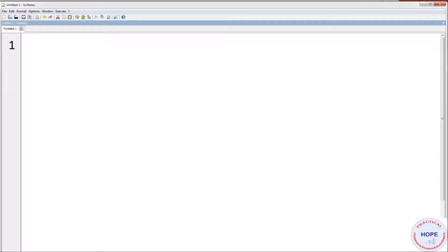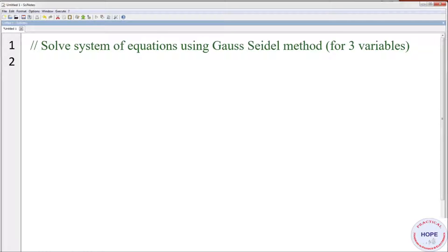First give a suitable title. Solve system of equations using Gauss-Seidel method. First we are writing the program for three variables. CLC and clear. First we need to define the coefficient matrix A. Then we define vector B.